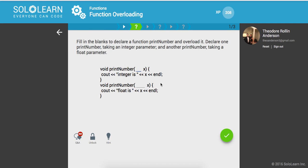So fill in the blanks to declare a function print number and overload it. Declare one print number that takes an int and the other takes a float. It takes an int and then this one takes a float. So just what they had.